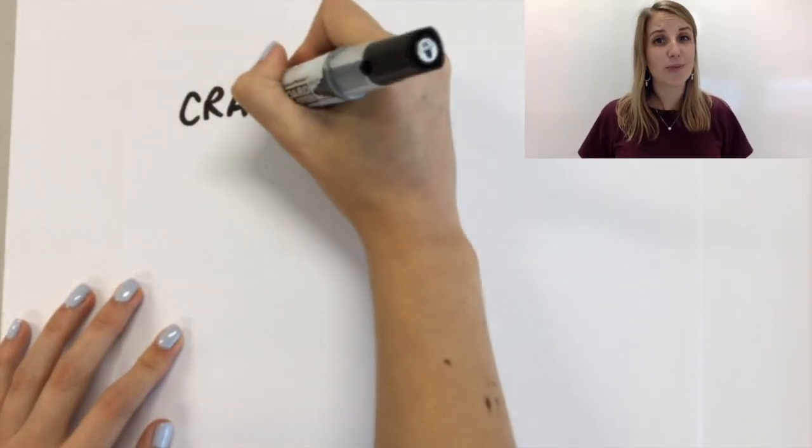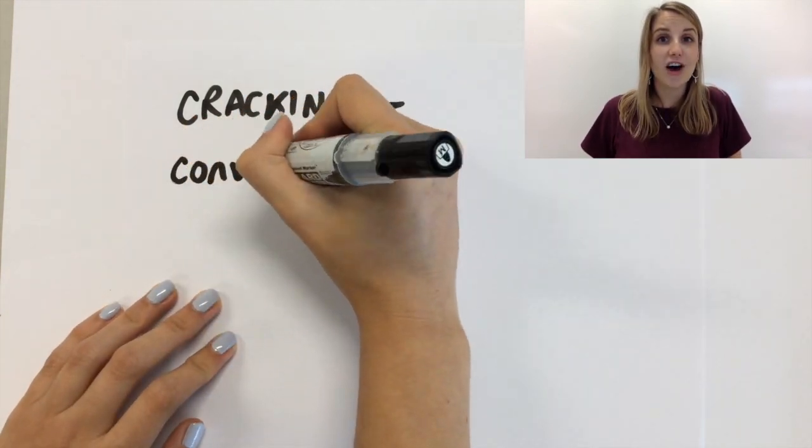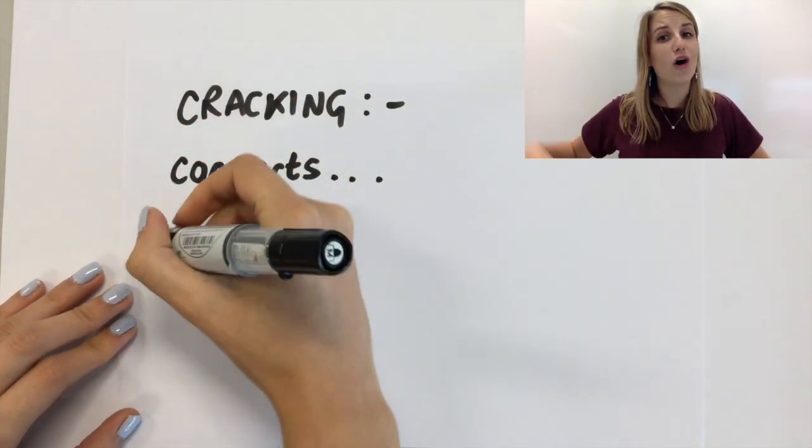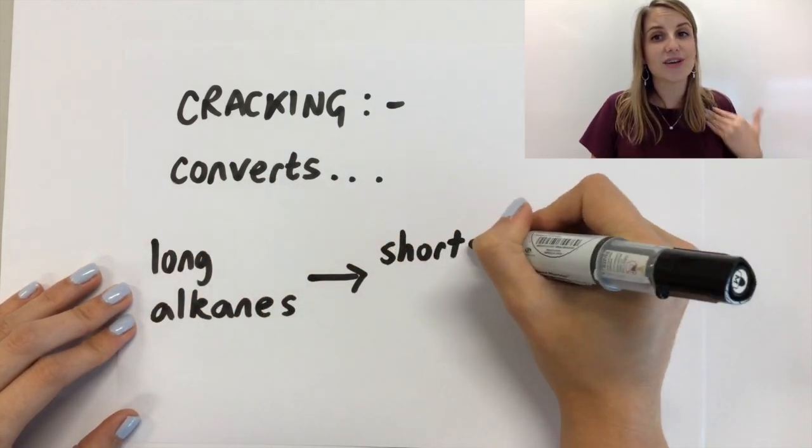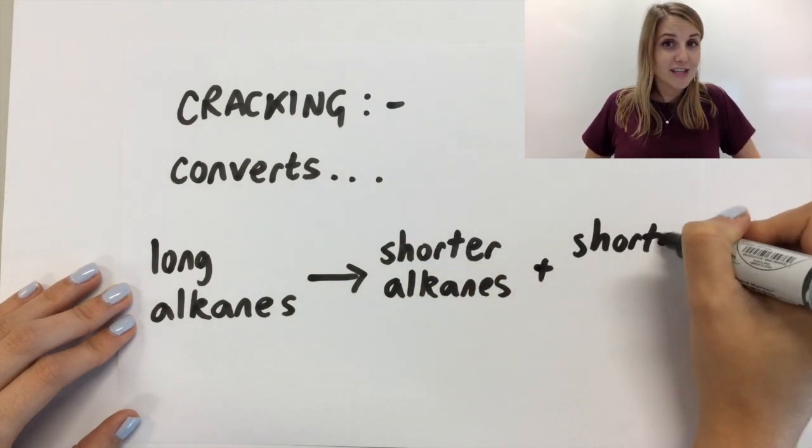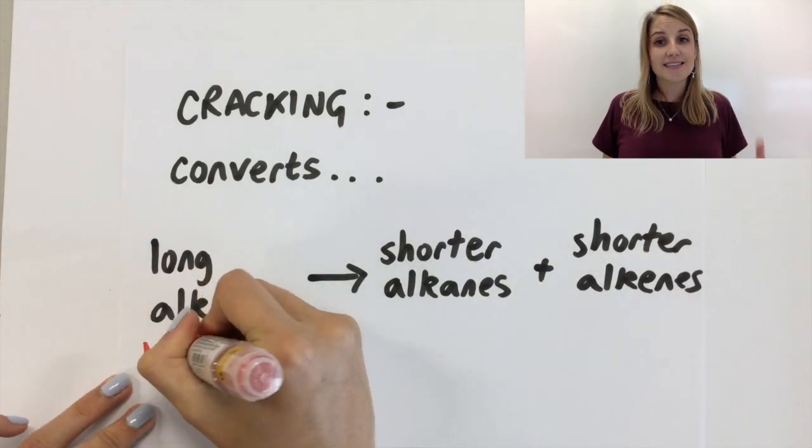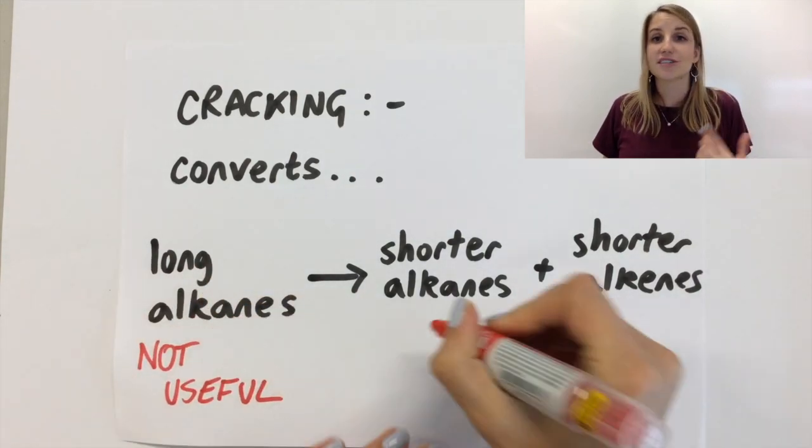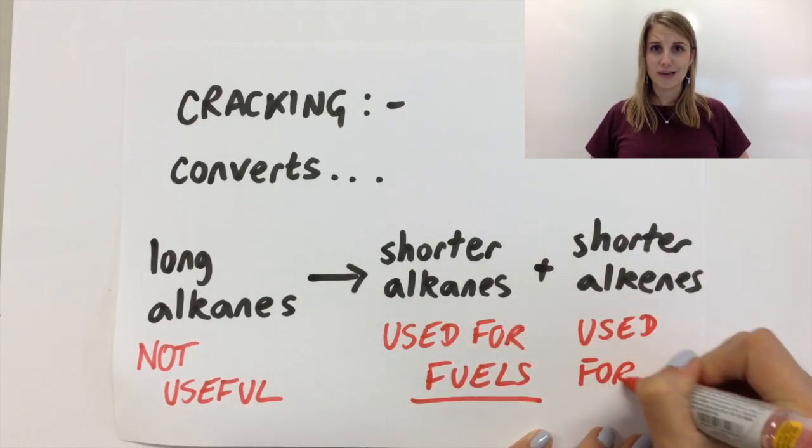In the simplest way of thinking about this, cracking converts these really long alkanes into much shorter alkanes and you also get an alkene out of it. Now the magic of this is that you're converting something that is not useful into alkanes which can be used as fuels and alkenes which can be used as plastics, which is awesome.